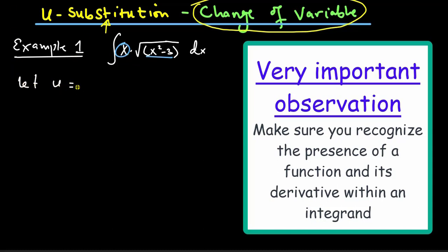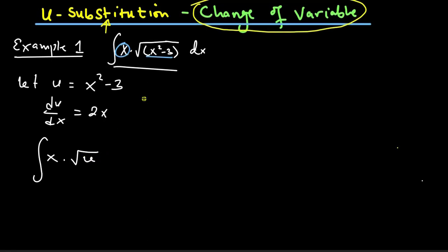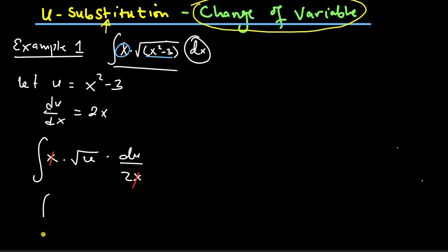I'm going to let u equal to the function x squared minus 3. The derivative of this function is going to be 2x. I will rewrite this integrand as the integral of x — I don't substitute for this x because I know it's going to cancel out — times the square root of u. And then instead of dx, I'll write that as du divided by 2x. You can clearly see that the x's are going to cancel out.